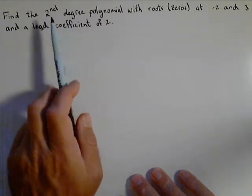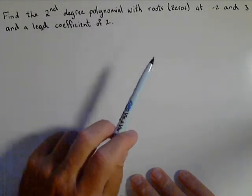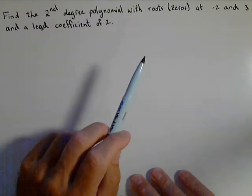Now remember, a second degree polynomial is a quadratic, so that means it has an x squared term and that's the highest power.